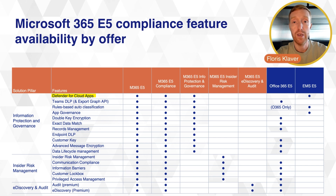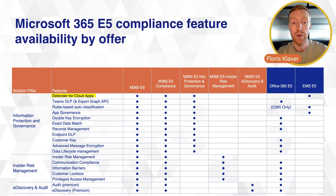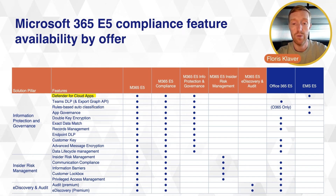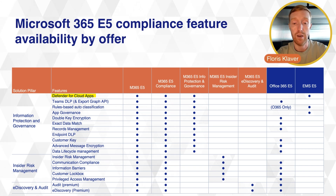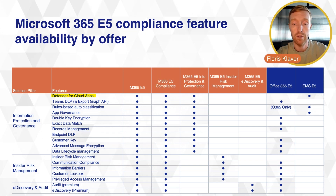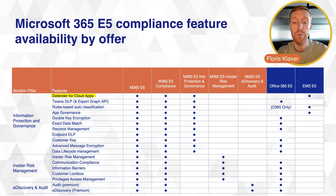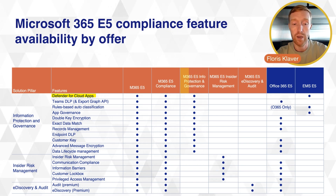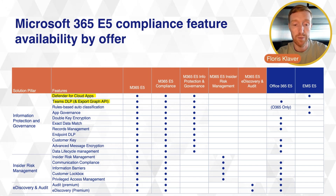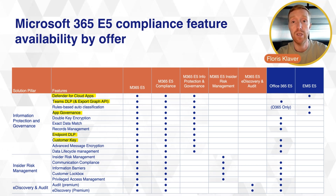The compliance suite is a massive suite of products — way too many to list out individually — but it's important to understand your options. Microsoft 365 E5 contains the full compliance suite, and Microsoft also sells this as a standalone Microsoft 365 E5 Compliance SKU. There are also sub-suites, such as the Information Protection and Governance suite, which covers information protection including Defender for Cloud Apps functionality, Teams data loss prevention, app governance, endpoint DLP, and customer key.